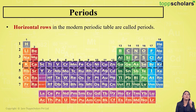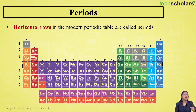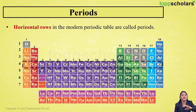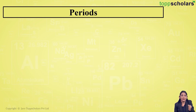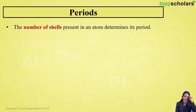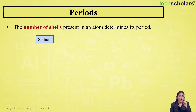In exams, we are often given the name of an element and asked to identify its position in the periodic table. Out of these 118 elements, how do we determine the position of an element? It's very simple — you just need to remember the atomic number. The atomic number helps you identify the number of shells present in an atom, and this number of shells helps us determine the position of the element in a period.